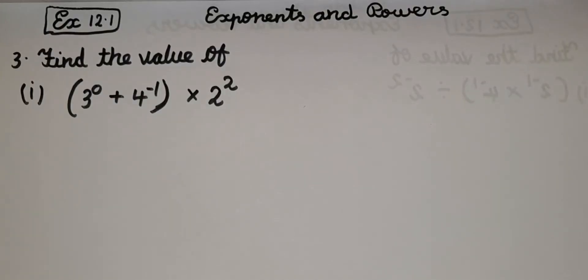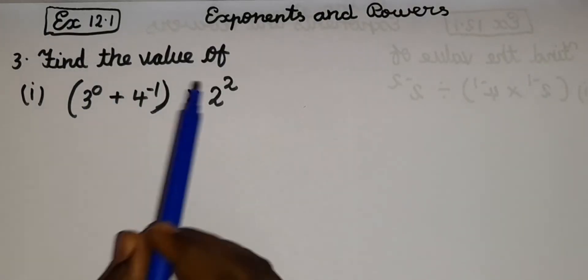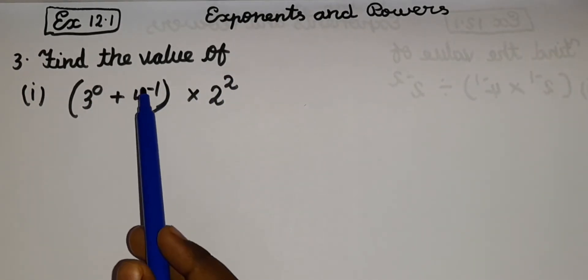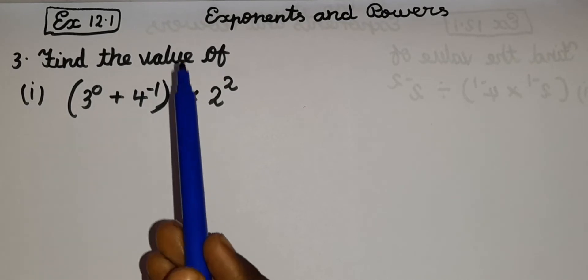So guys, let's read the question. Find the value of 3^0 + 4^(-1) × 2^2. So in this question, what we should do is we should find the value of this.